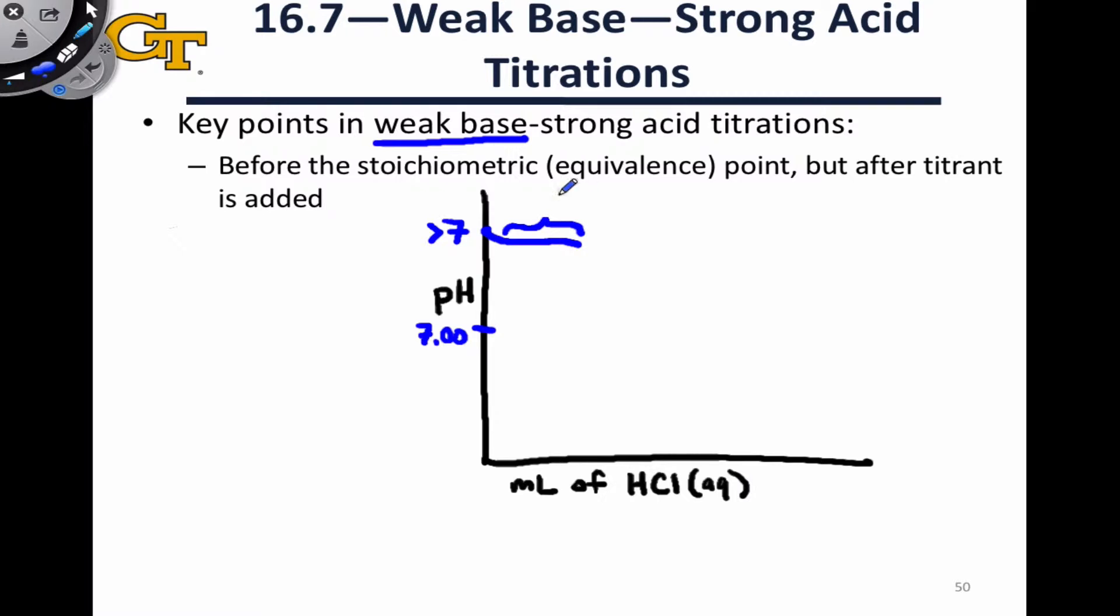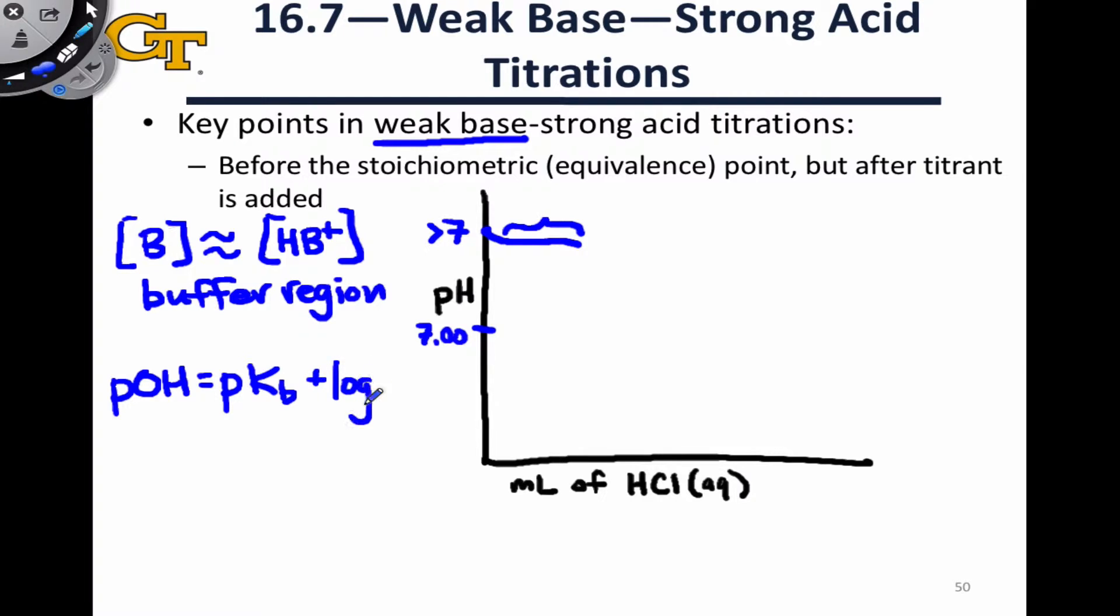In this region we have appreciable amounts of both B, the base, and its conjugate acid HB+. Since these two concentrations are on the order of one another and at some point along this region those concentrations will be exactly equal, what we're dealing with here is a buffer region. At this point it's relatively easy to calculate at least the pOH of the mixture by applying pKB for the base and the Henderson-Hasselbalch equation, which says that the pOH is equal to pKB plus the log of the conjugate acid concentration divided by the base concentration.